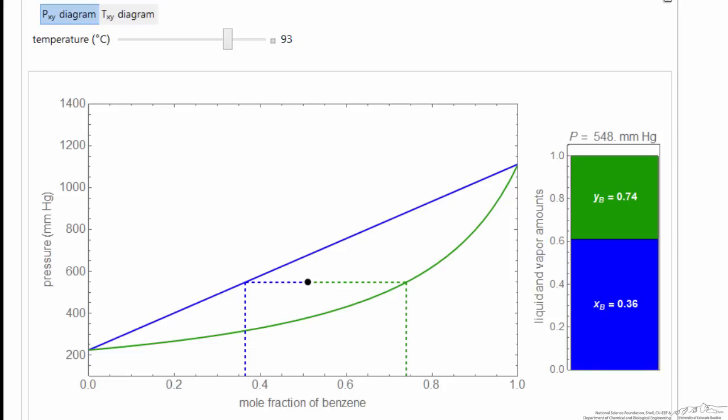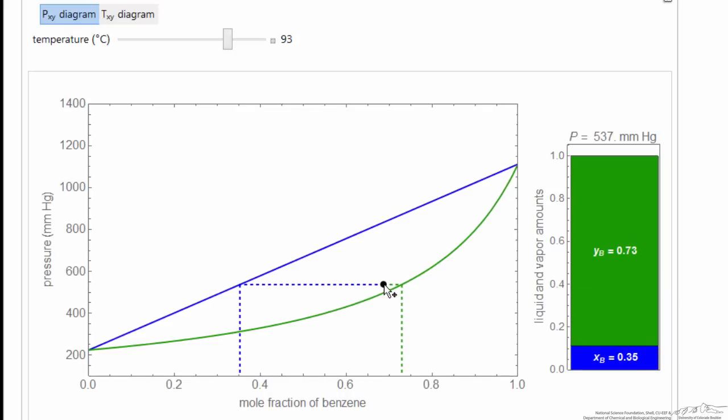Here in the interactive simulation, we're showing a plot of pressure versus mole fraction. This is at one temperature, in this case 93 degrees C. And I can move this dot around. So I move it at essentially constant pressure, and we don't change the mole fractions in the liquid and the vapor. We change the relative amount - as I move to the right, more vapor and less liquid.